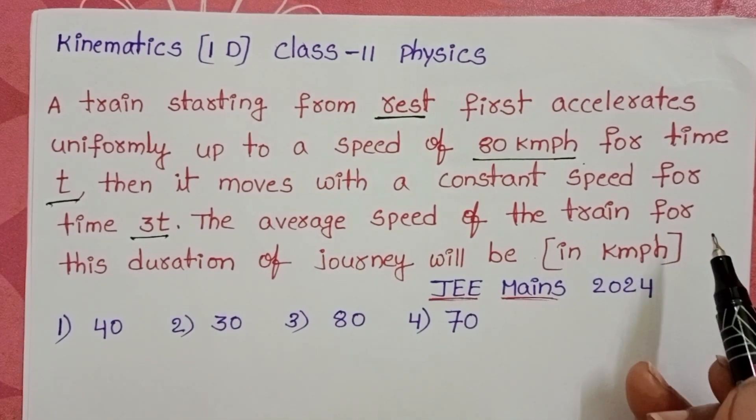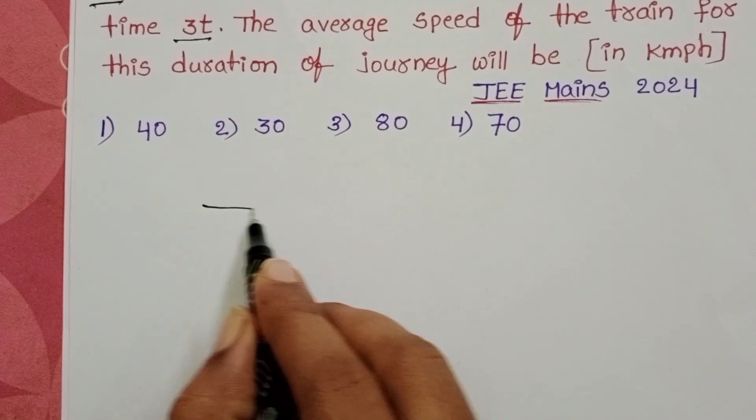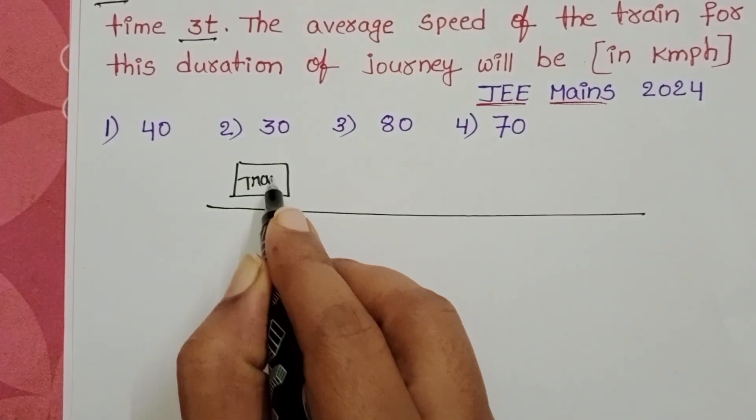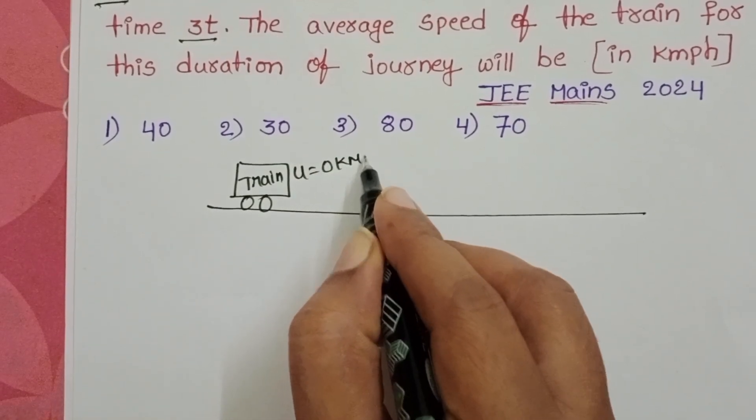The average speed of the train for this duration of journey will be. In given question, initially a train is at rest position. U is equals to 0 km per hour.